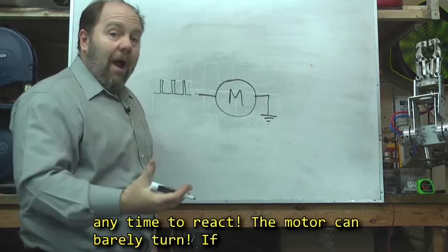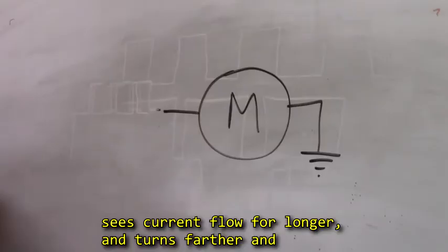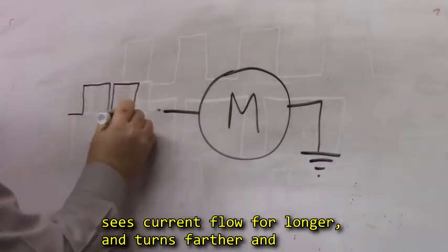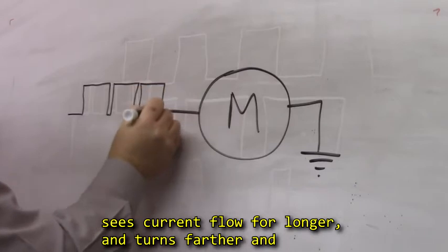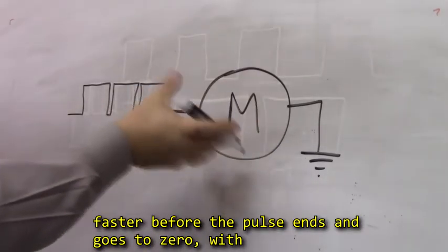If the pulse width is wider and longer, then the motor sees the current flow for longer, and it turns farther and faster.